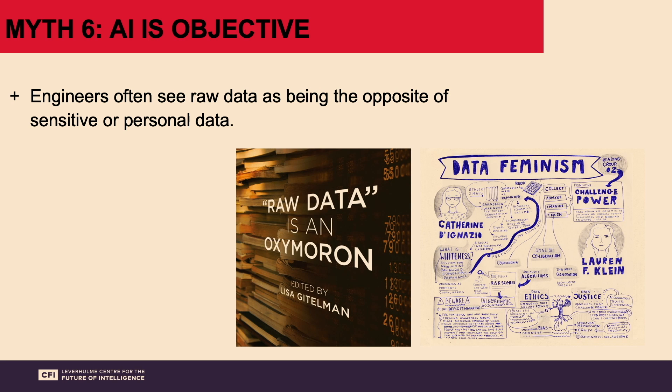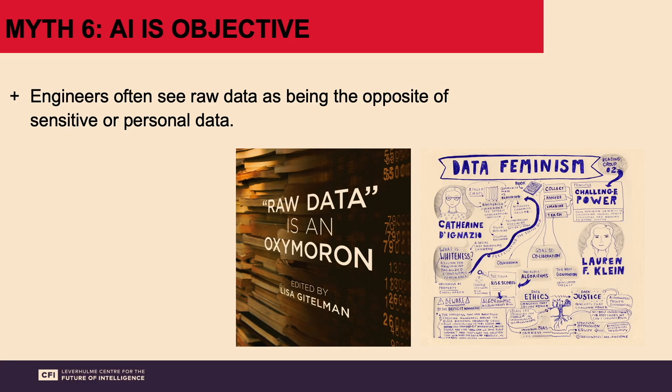Myth six: raw data is possible — that data can be raw. When we think of raw food, we think of something uncooked, natural, pure. But data is always harvested in a particular way. There are always choices made about how it's selected, aggregated, and cleaned. Those are all political choices. There's an amazing book called Data Feminism by Catherine D'Ignazio and Lauren Klein about how feminist methods can make the use of data better — showing that feminist ideas make a real difference in something as specific and practical as data.